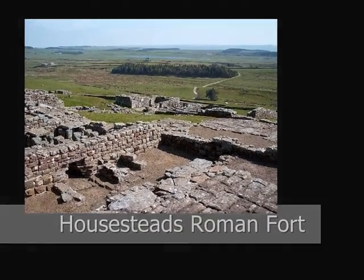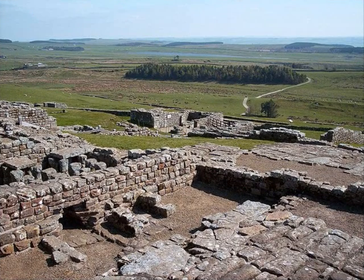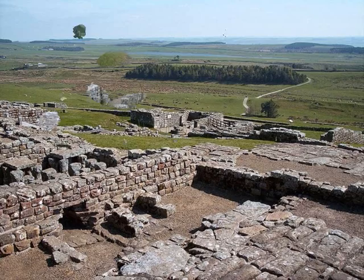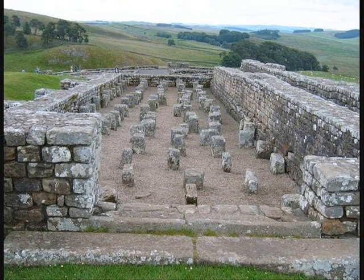Housesteads was an auxiliary fort on Hadrian's Wall in the Roman province of Britannia. The Romans built it in stone around Anno Domini 124. You can see a picture of the granary with its pillars supporting a floor to keep the food dry and free from vermin. Today you can visit its on-site museum and recreate the life of a Roman soldier.